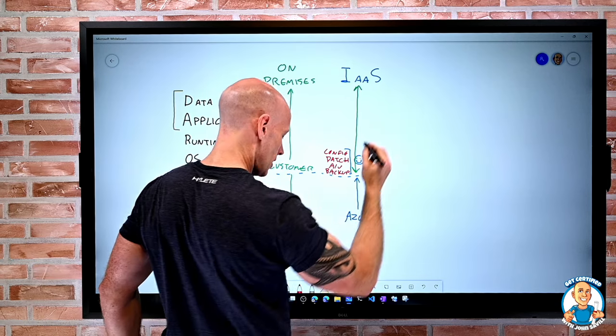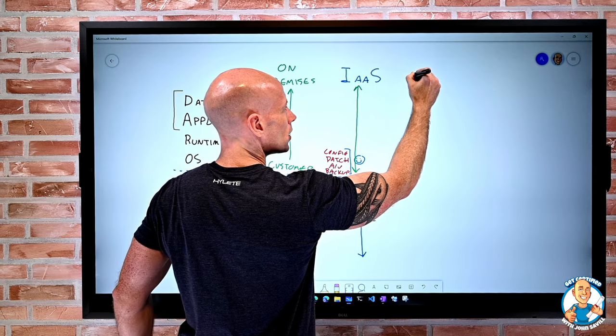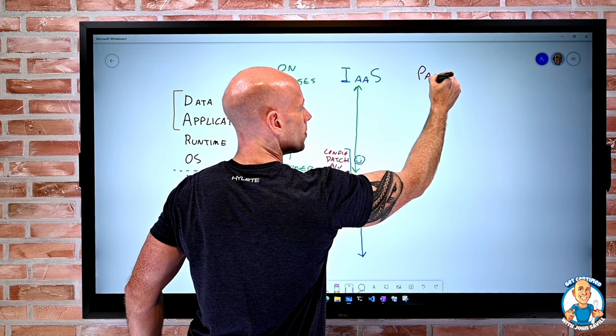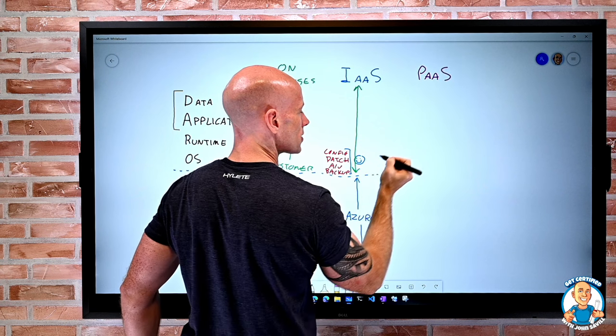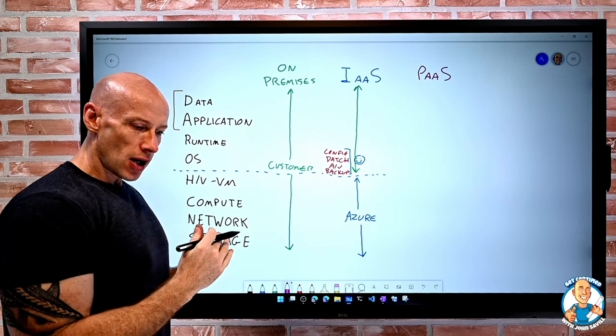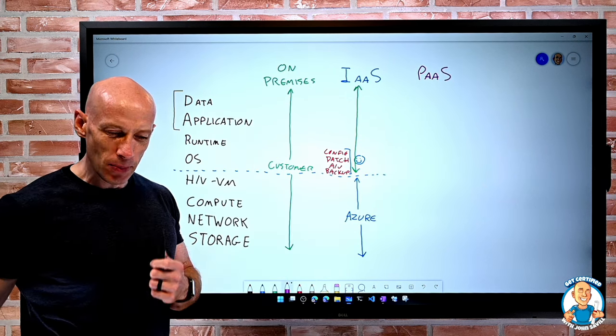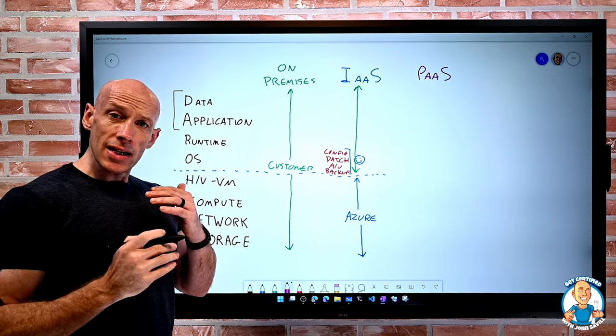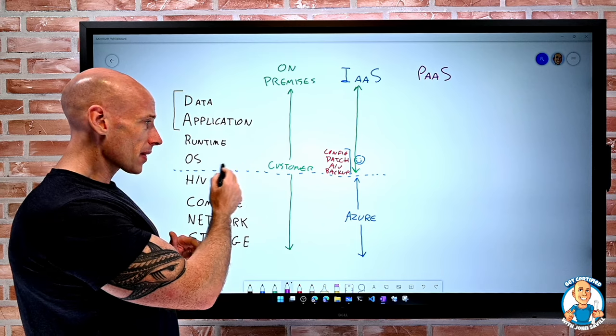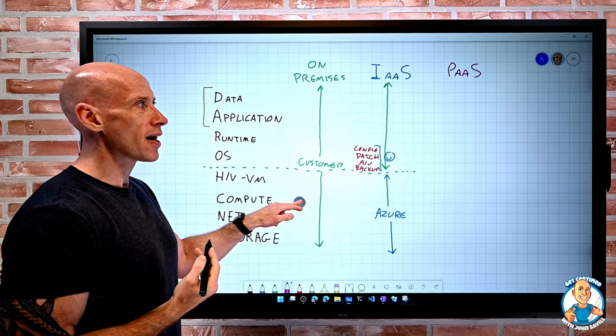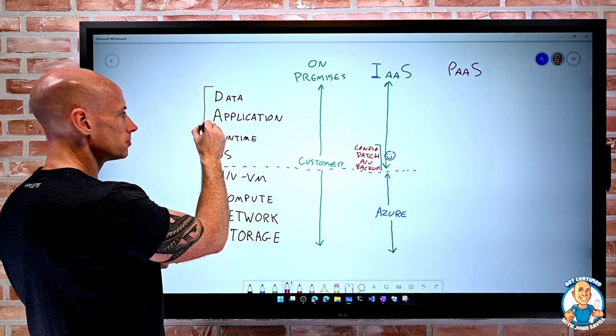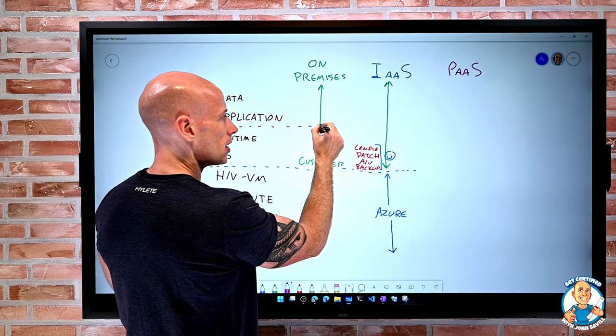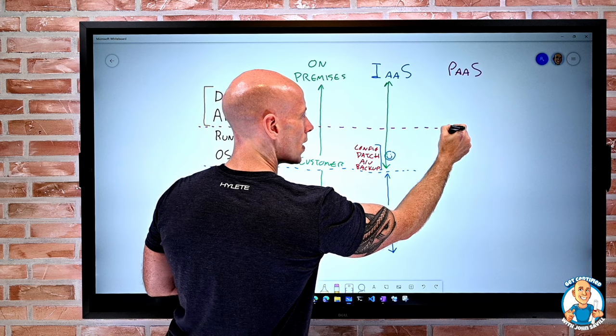So as we move up the stack, the next one is PaaS, Platform as a Service. Now there are different kind of shades of PaaS, and this will make a little bit more sense later on. Now there are likely still virtual machines running, but I don't see them. I'm not worrying about them.